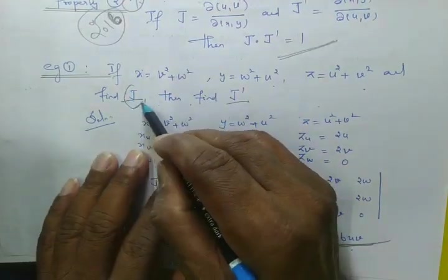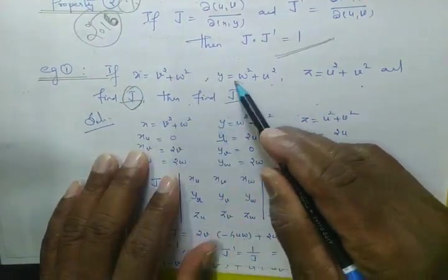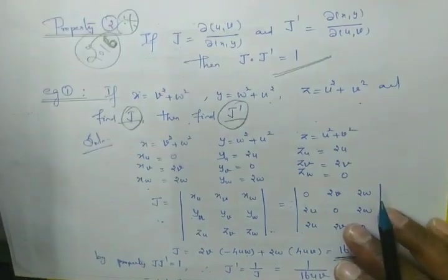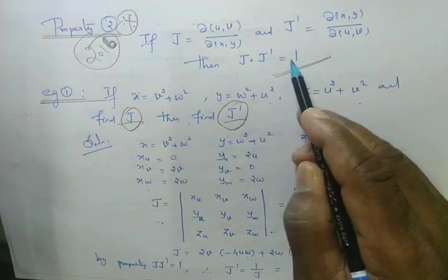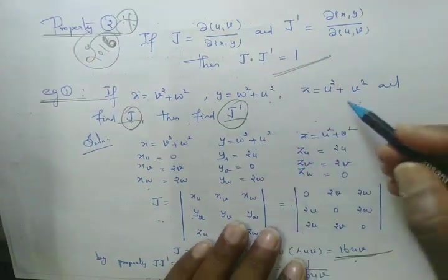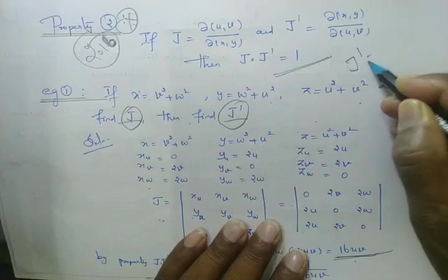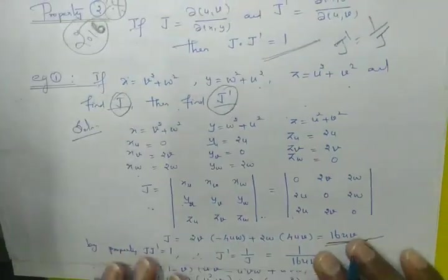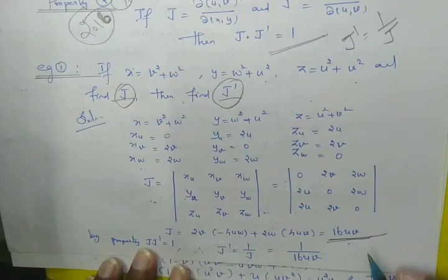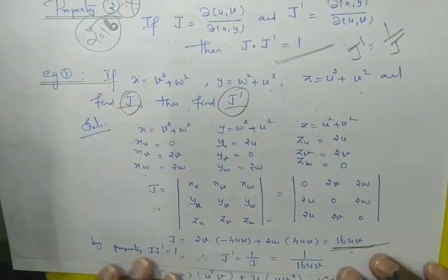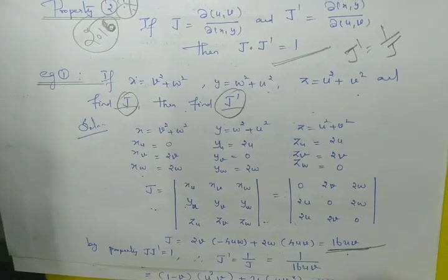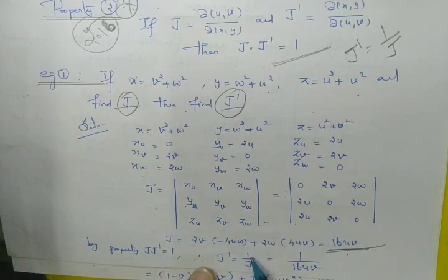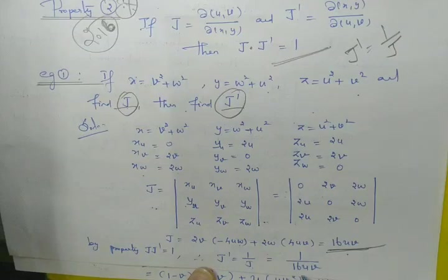So first find J, and also find J dash. By Property 2, J times J dash equals 1. Then J dash is equal to 1 by J. So after finding J, J value is 16uv. By the property, J times J dash equals 1. Therefore J dash equals 1 by J, which gives J dash equal to 1 by 16uv.